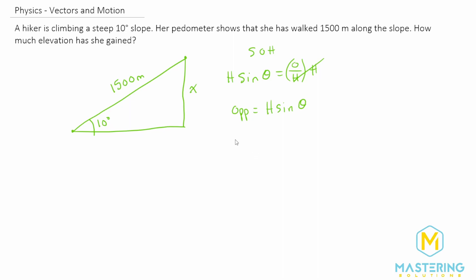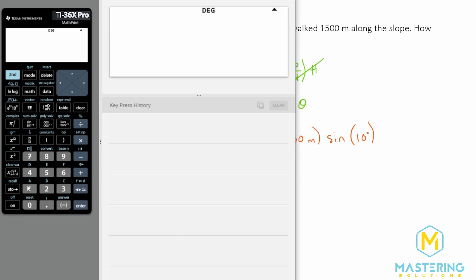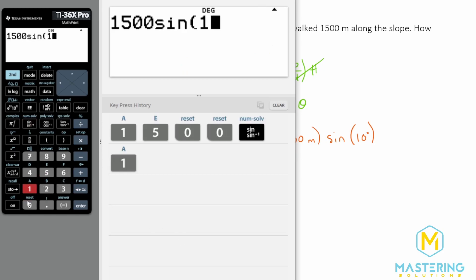So the opposite is equal to the hypotenuse, which is 1500 meters, times the sine of the angle, which is 10 degrees. So now we have 1500 times the sine of 10 degrees.